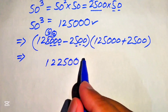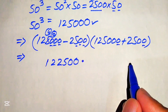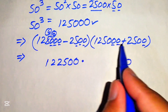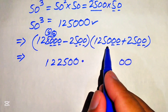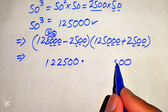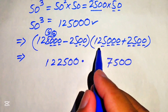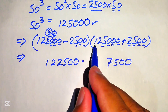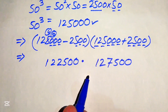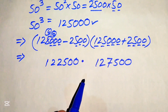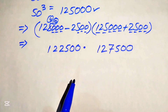Now we add the two values: 0 plus 0 is 0, 0 plus 0 is 0, 0 plus 5 is 5, 5 plus 2 is 7, and at the last we get 1 and 2. So 125,000 plus 2,500 equals 127,500. These are the bigger numbers and we need to multiply them in a very smart way.